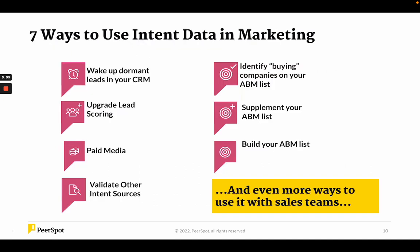So what are seven ways to use intent data in marketing? Number one: wake up dormant leads in your CRM. You've got your standard CRM system — this is a good way to identify people who are engaging at a very late stage. From the review platform perspective, let's say Home Depot is coming in and comparing product A to product B and they were a cold lead in your CRM. Use that information — that intel — to make them a warm lead.